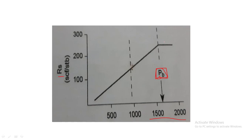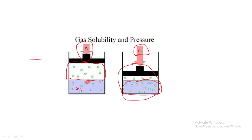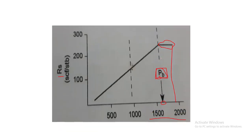Up to the bubble point pressure — let us say starting from 1800, reaching 1600 — up to this point there is no change in the volume of Rs, meaning no change in the volume of gas within the oil. After the bubble point pressure is reached, the gas within the oil is gradually decreasing. So the gas solubility gets decreased within the oil once the reservoir pressure reaches the bubble point pressure.